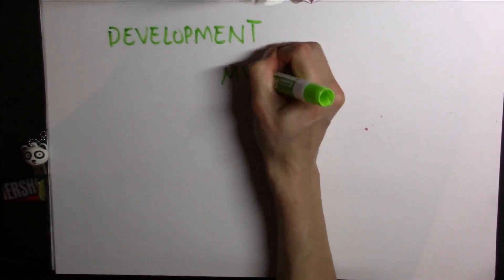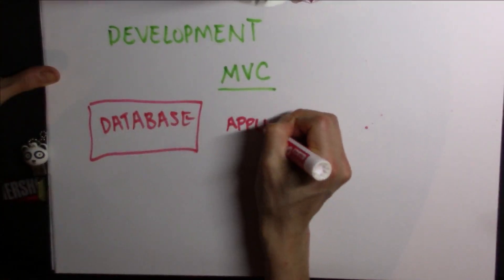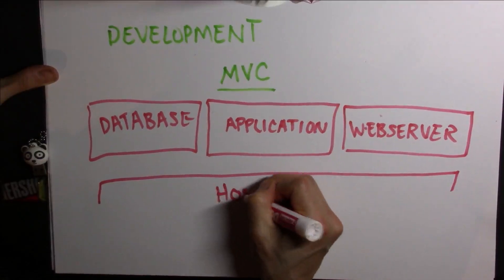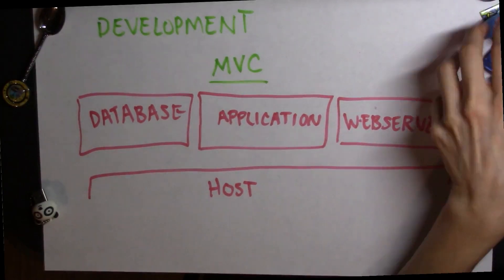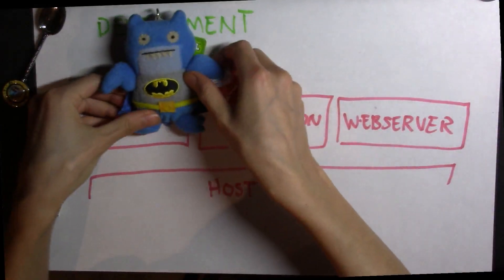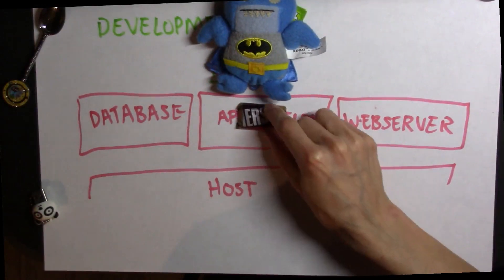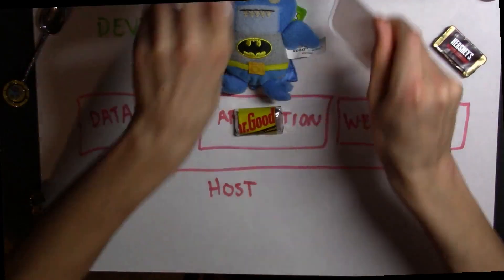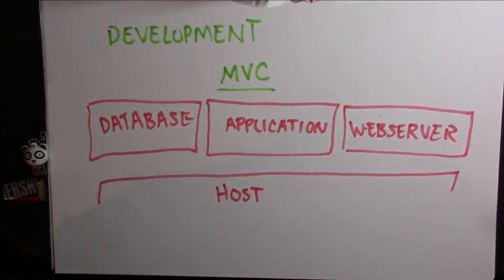It used to be the case that if you wanted to develop a simple model-view-controller application — generally meaning you have some application, a database, a web server, and your back end is serving up views for a front end — you would need to actually install all the components on your host. When I was in grad school before I found Docker, which is a container technology, I used to do that. It was really hard because if I wanted to work on two of these applications, they would conflict. Containers totally help with that because you can have multiple different sets of applications via containers running at the same time.